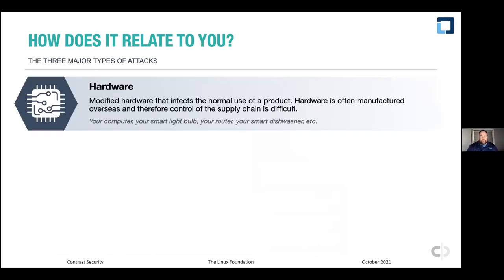We're really here to focus on technology supply chains and how they relate to you as industry technology experts. There are three major types of attacks we'll cover. First, hardware supply chain attacks — these involve modified hardware that infects the normal use of a product. Hardware is often manufactured overseas, making control of the supply chain extremely difficult. It's in your computer, your smart light bulb, your router, your dishwasher, and so on.